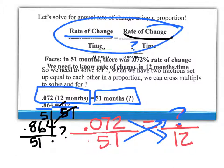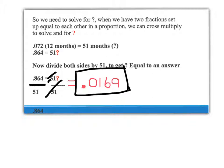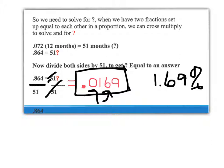We're trying to find out that rate of change. We end up with 864 divided by 51, and that answer, when we plug it into our calculator, is 0.0169. If we multiply this by 100 and move the decimal two places, we would end up with a rate of change of 1.69% in one year. To work with this number, though, we want to stay in decimal format: 0.0169.